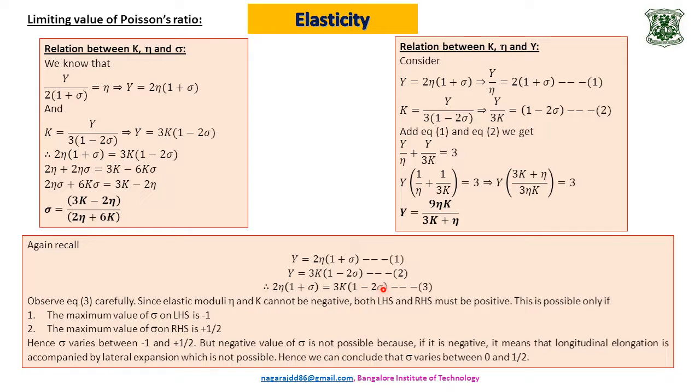So in order to maintain positive sign on both the sides either you put sigma equals minus 1 up to minus 1 on LHS or up to half on RHS. So we can say sigma therefore varies between minus 1 and plus half. But negative value of sigma is not possible because if it is negative it means that longitudinal elongation is accompanied by lateral expansion which is not possible. Suppose if sigma is negative it means that there will be elongation in both the directions which is not possible. Therefore sigma becoming negative is ruled out. Therefore we can say sigma varies from 0 to half. So the limiting value of sigma is 0 to half.